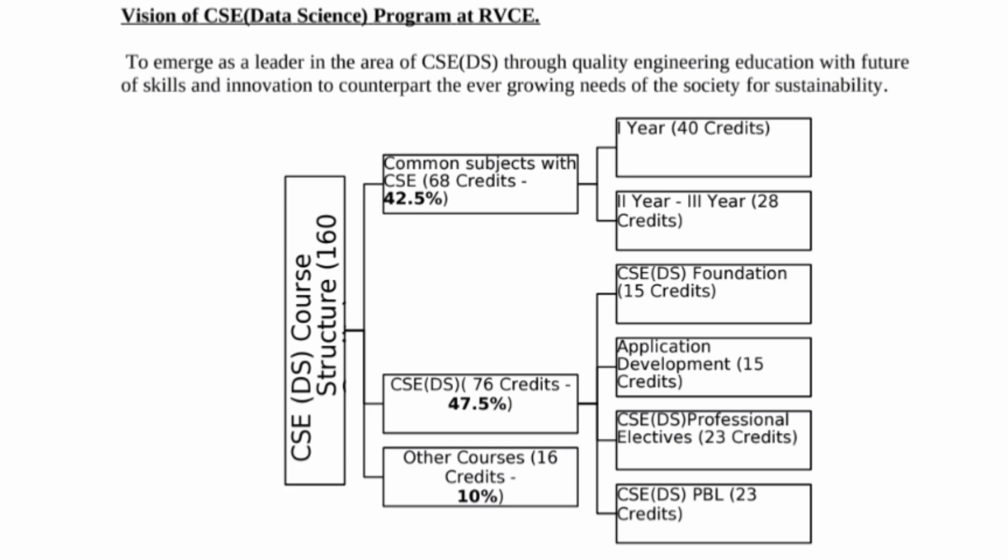Looking at the year-wise credit breakup: Year 1 is 40 credits. From Year 2 to Year 3, there are 28 credits common with CSC core. Then there are foundation courses worth 15 credits, application development worth 15 credits, CSC Data Science professional electives worth 23 credits, and Data Science with project-based learning worth 23 credits. All together that adds up to 160 credits. If you earn all 160 credits, you pass the exam and receive your degree.